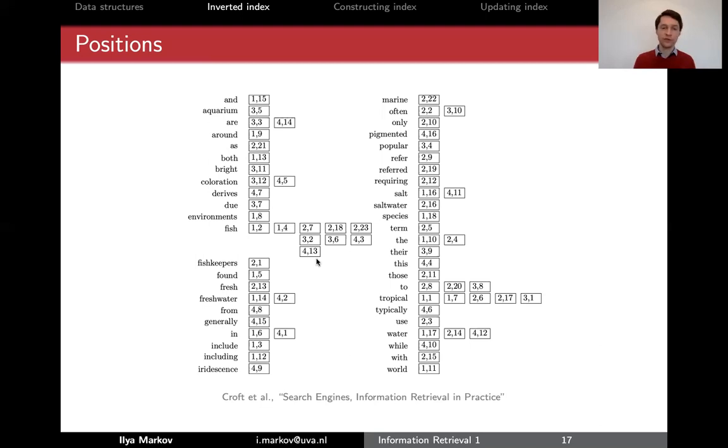So these positions by the way may be helpful to deal with phrases. So in the previous set of videos we talked about extracting phrases from text. So now you can see that if for example in document, so if we want to see whether 'tropical fish' is a phrase we see that in document one tropical occurs in position one and fish occurs in position two so actually they occur close to each other, so next to each other actually, so that might be a phrase.